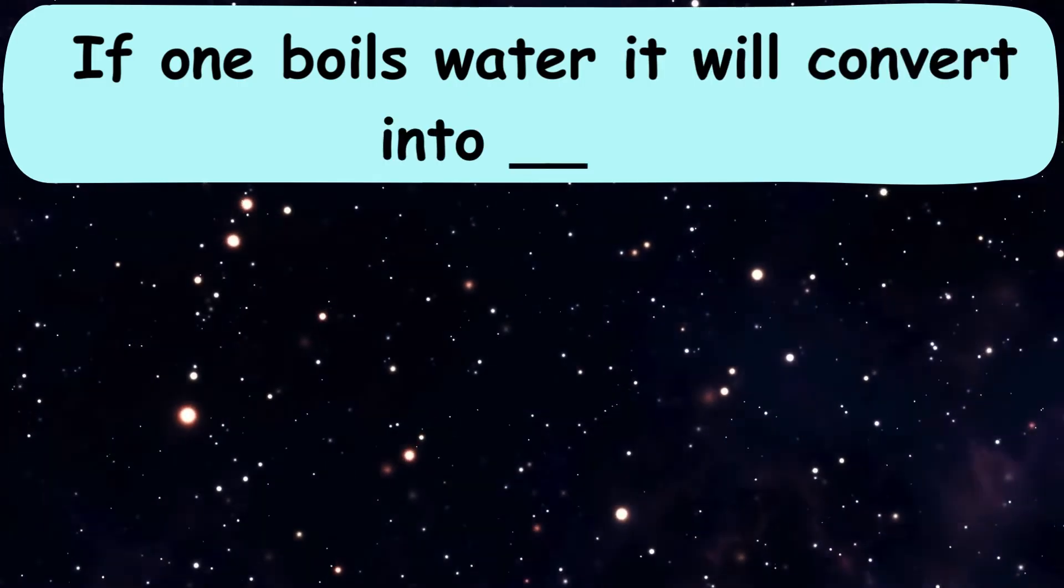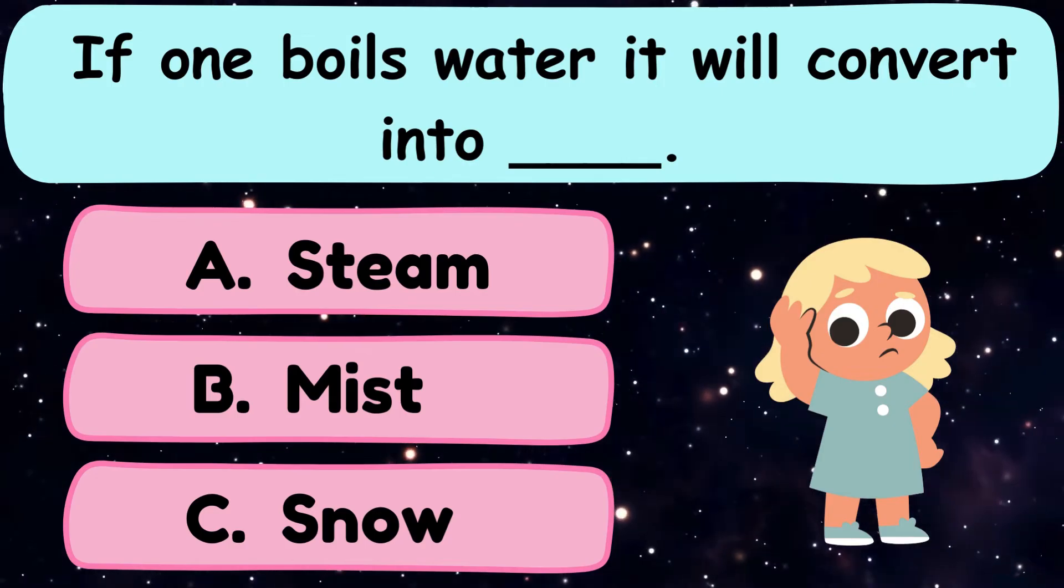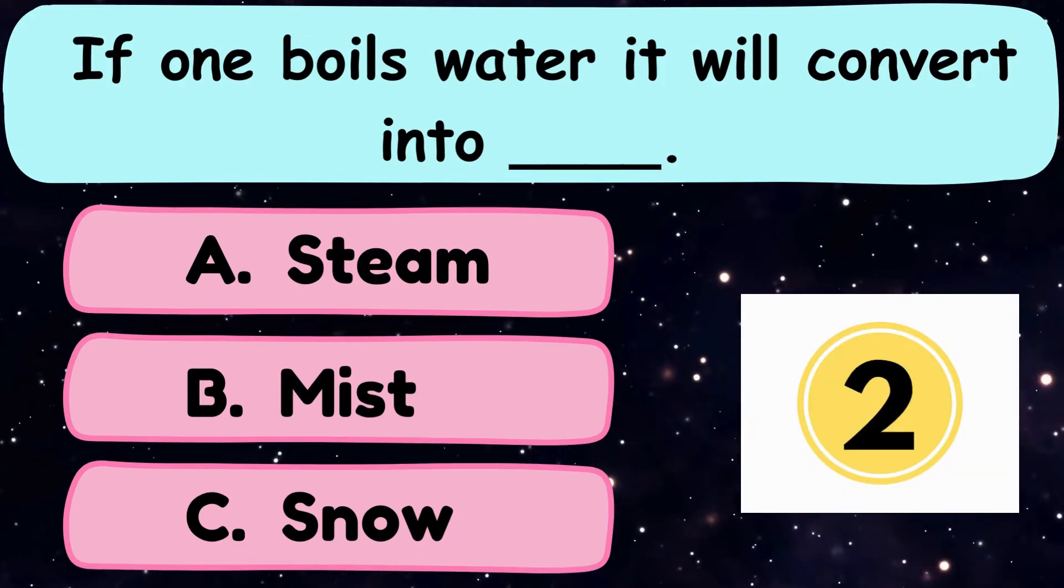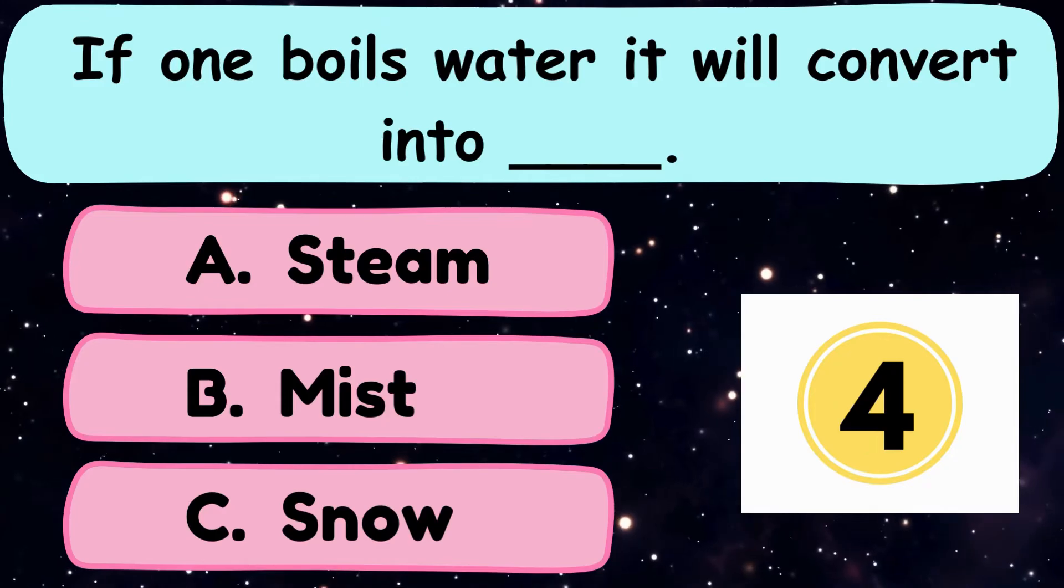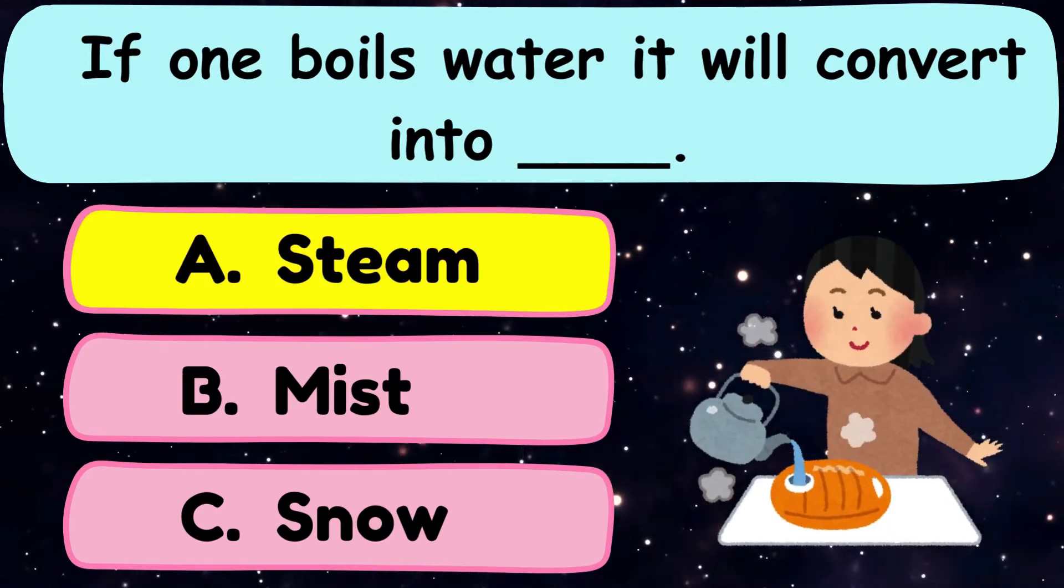Question number 23. If one boils water, it will convert into dash. A. Steam, B. Mist, or C. Snow? And the correct answer is option A. Steam.